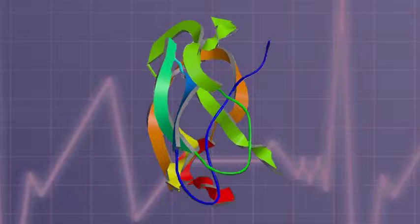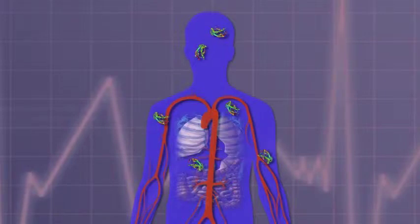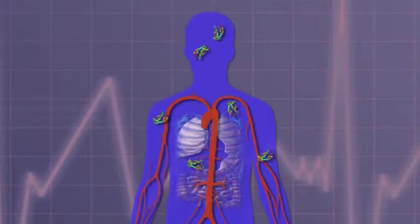The particular protein, the amyloid beta protein associated with Alzheimer's disease, is found in everybody's body. However, in a subset of patients with Alzheimer's disease, that protein is associated with a number of genetic mutations that lead to an early onset of the disease.